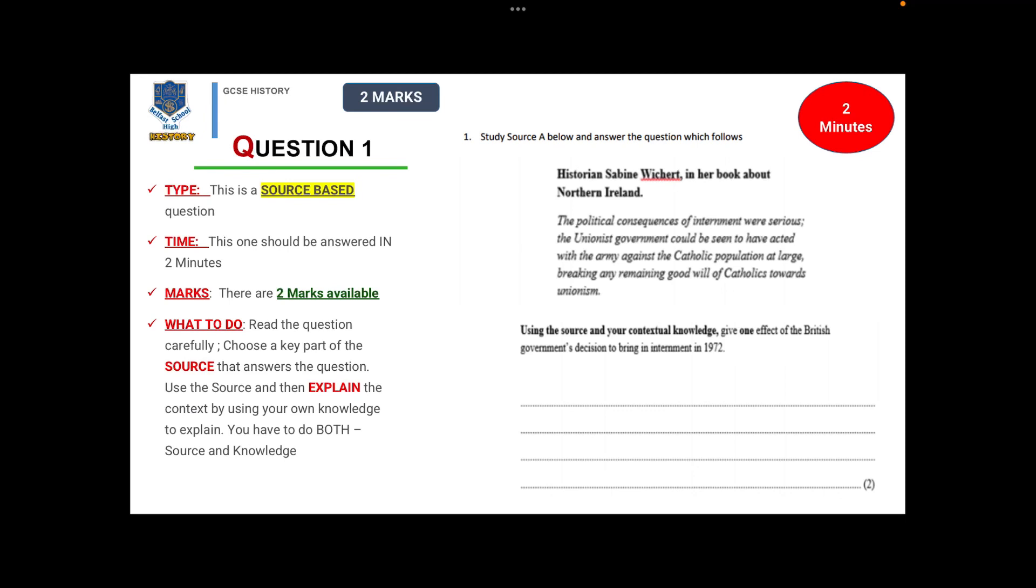For the Northern Ireland section you have a range of questions that test your skills. You should set aside about an hour for this out of the hour and 45 minutes available. The first question is a source-based question worth two marks, asking you to do two things, and you should set aside two minutes. You have to use the source and your contextual knowledge to explain a question. Choose the key part of the source that answers the question and then use your contextual knowledge to explain.